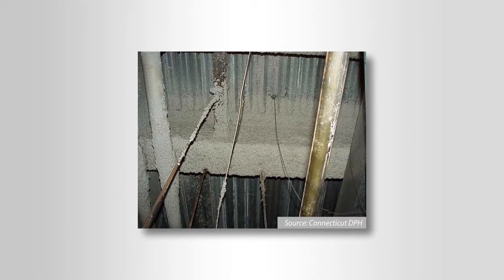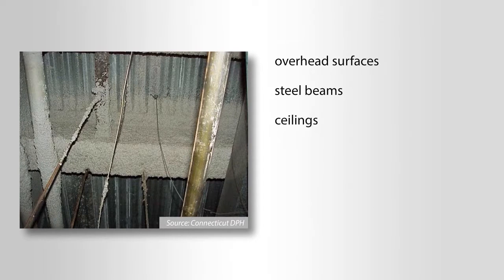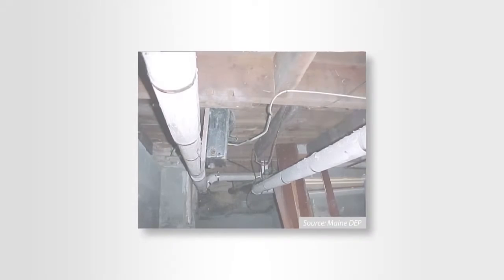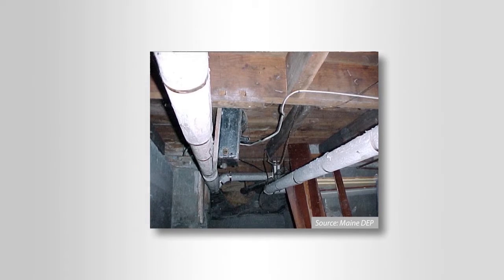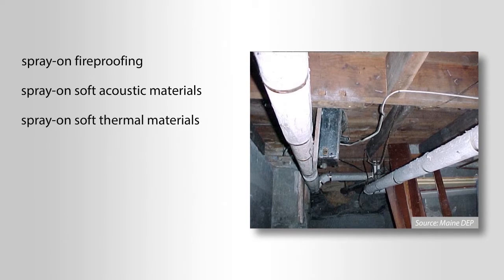It is usually applied by spraying but can also be troweled onto overhead surfaces, steel beams, ceilings, walls, furnaces, cement pipes, and car brakes and clutches. In addition to a wide variety of commercial and industrial applications, asbestos was used in major building materials such as spray-on fireproofing, spray-on soft acoustic materials, spray-on soft thermal materials, and pipe and boiler insulation.